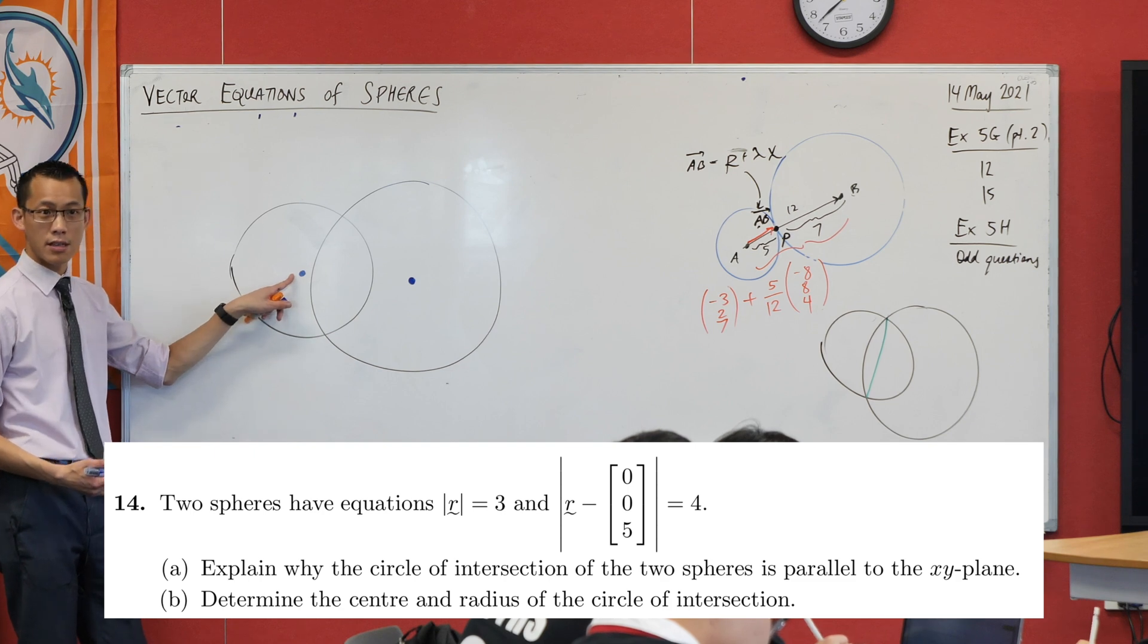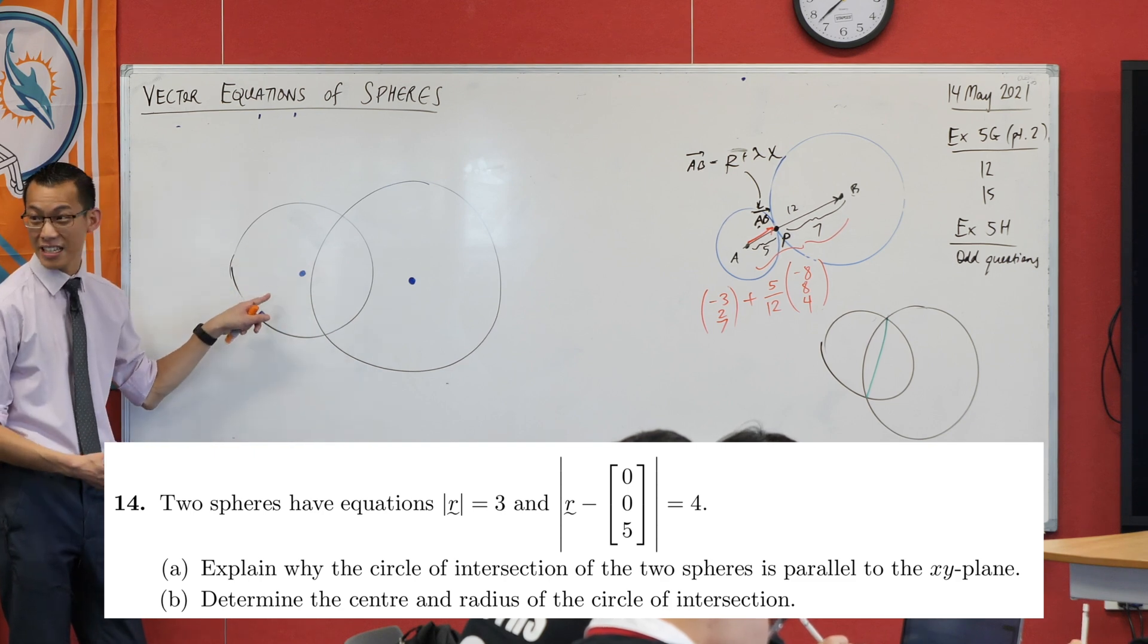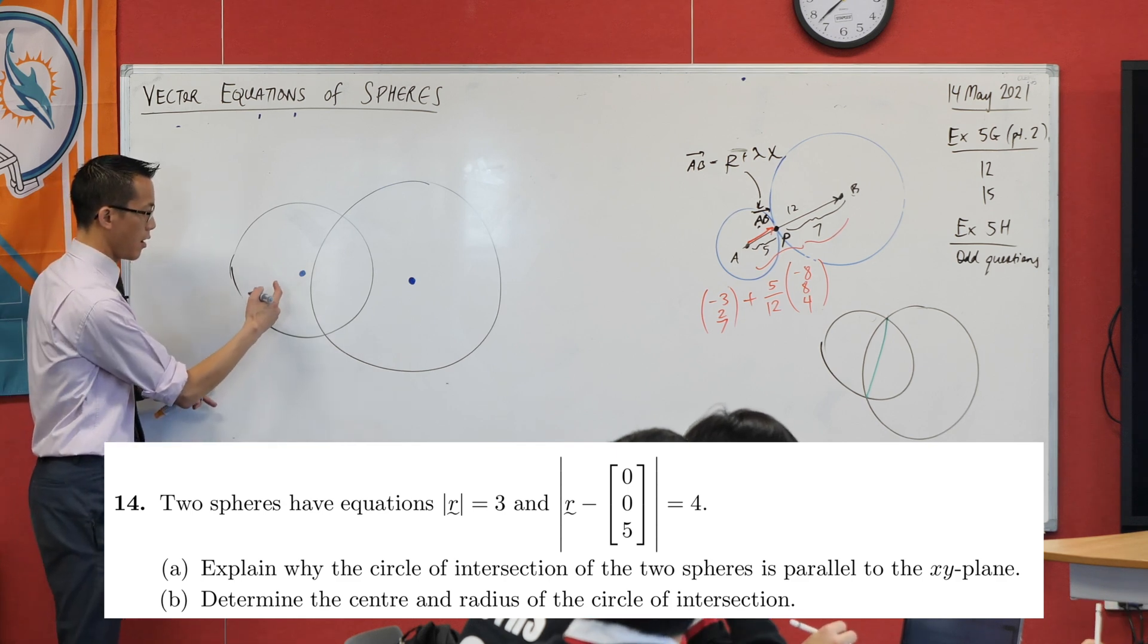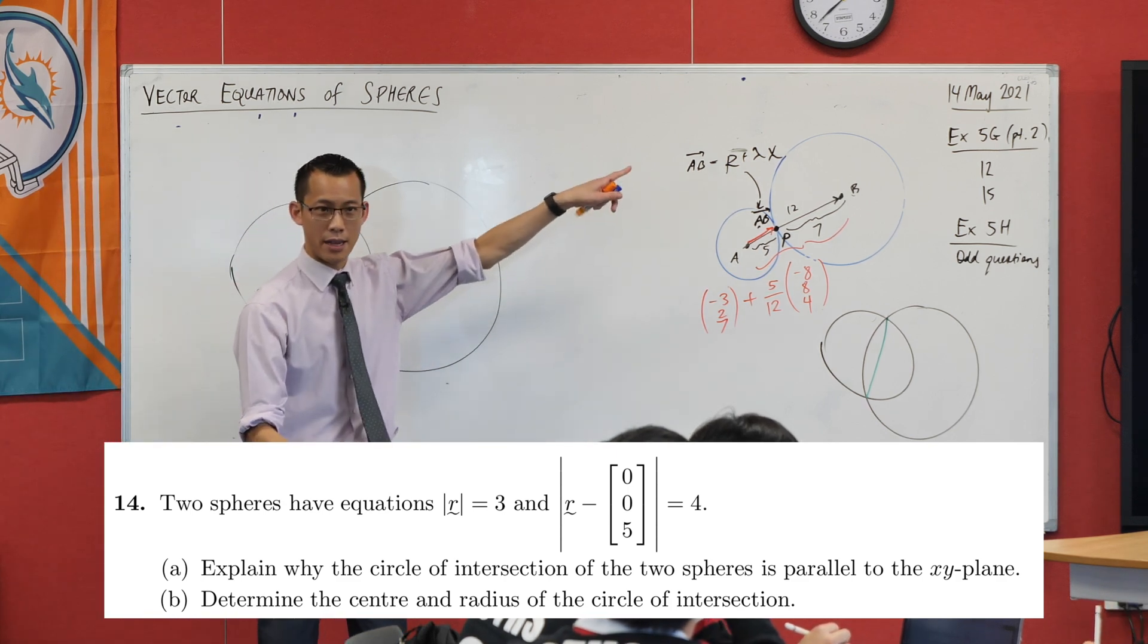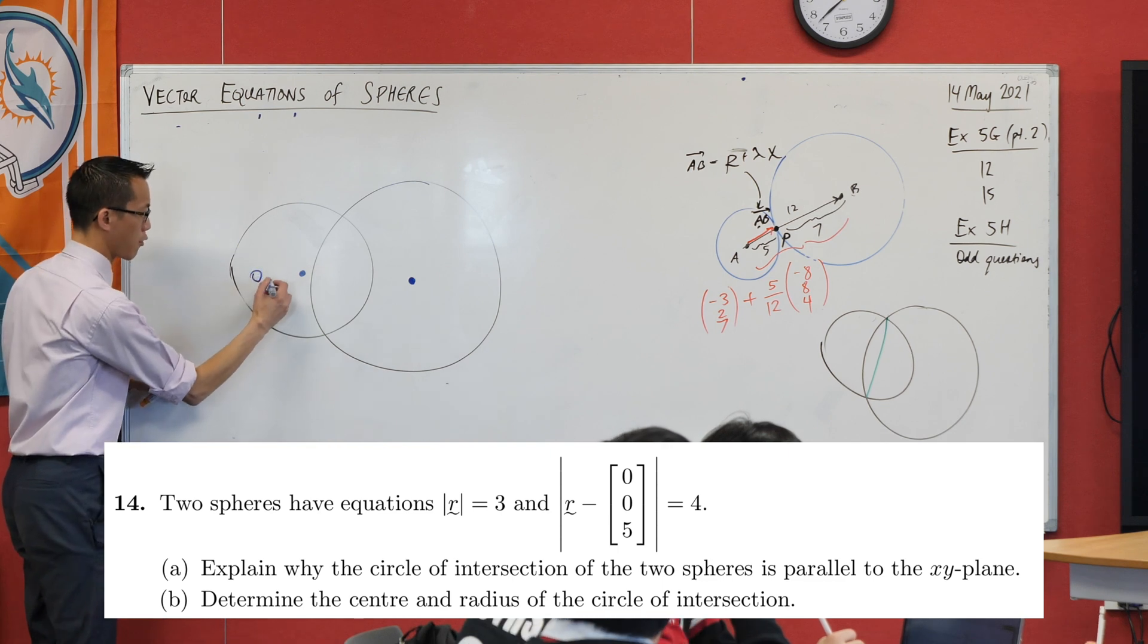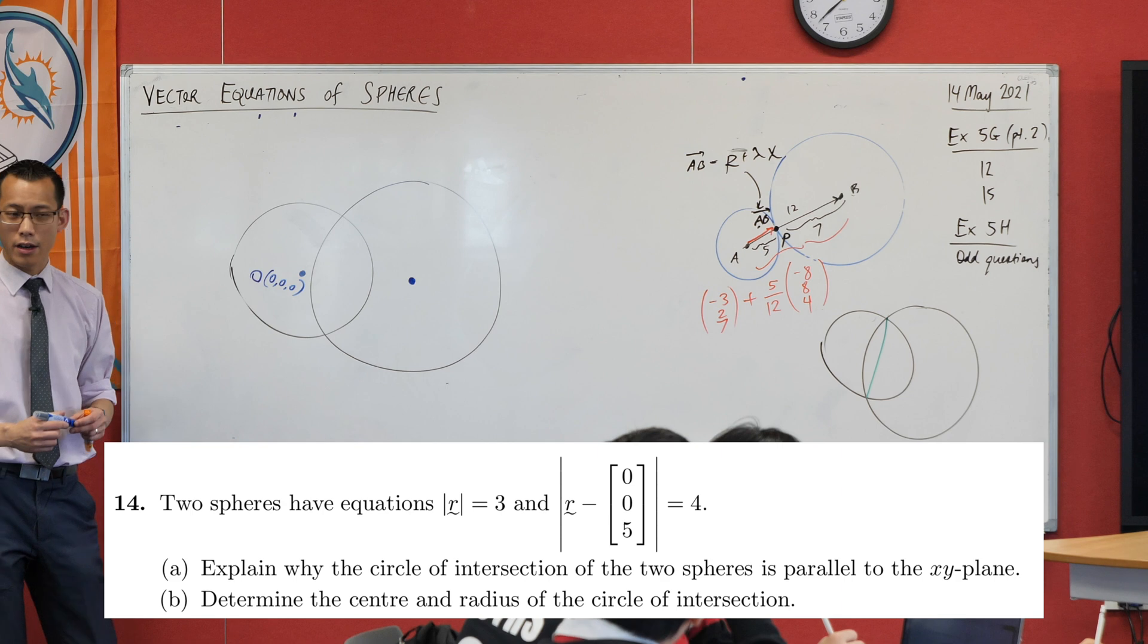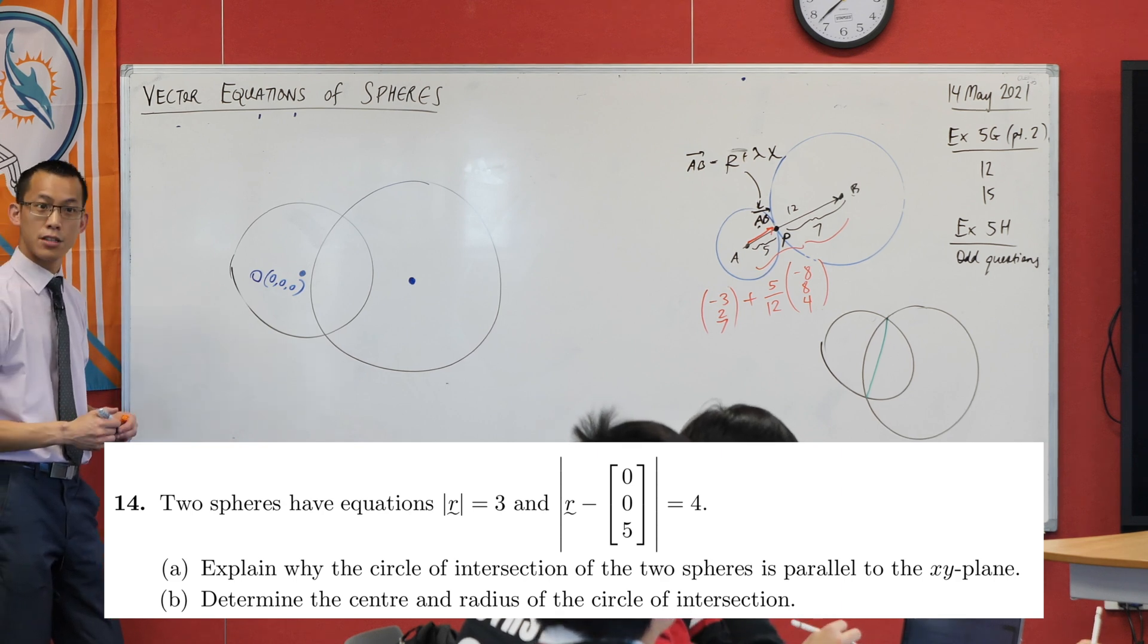This is the smaller circle, right? So what's its center? It's the origin. I'm going to call this O for origin, and I'll write that as (0,0,0). What's my other center? (0,0,5). Let's call this one A.